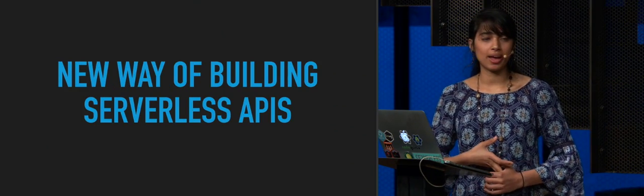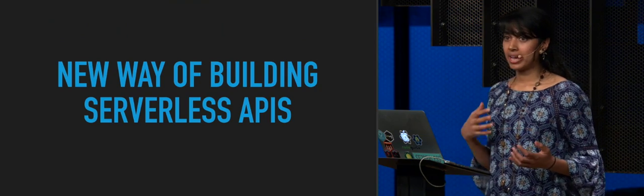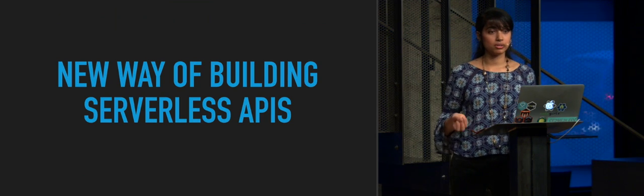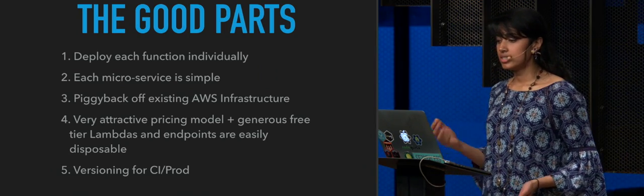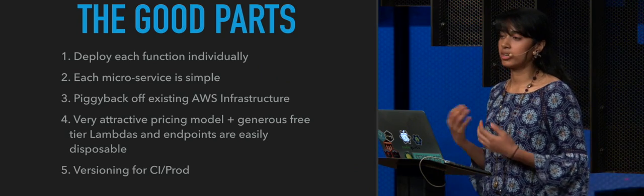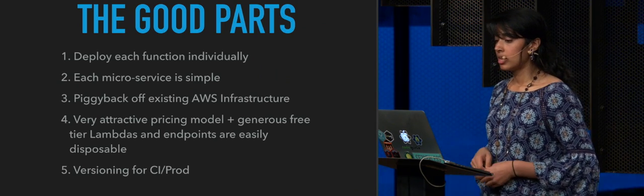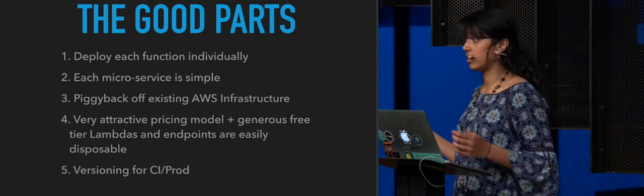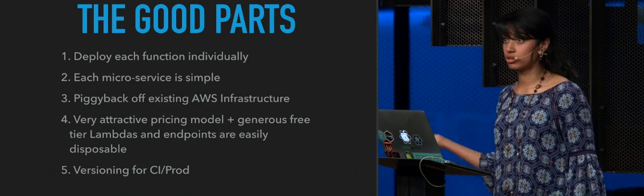We really think this is a new way of building serverless APIs. You can have a very complex architecture, but the client is only ever aware of this single endpoint, and they can fetch all the data they need in a single round trip to the server. The good parts of using a serverless GraphQL architecture: you can deploy each function individually, the microservices architecture makes it really modular and easy to update functions individually. You can keep all your microservices really simple — the one Lambda function that gets songs from the third-party API, that's all it does. There are also benefits of Lambda's pricing model and free tier.